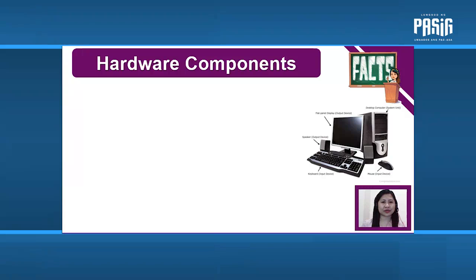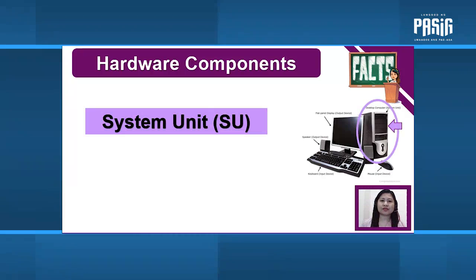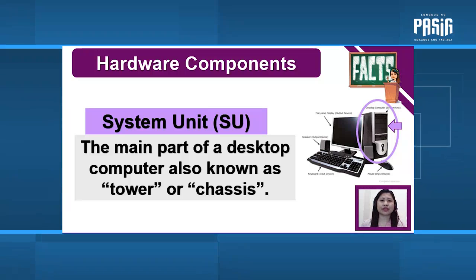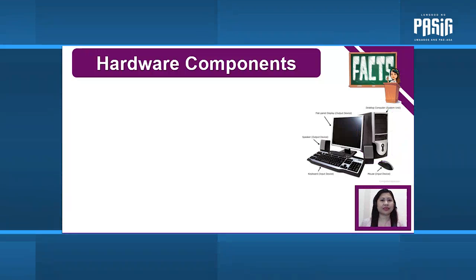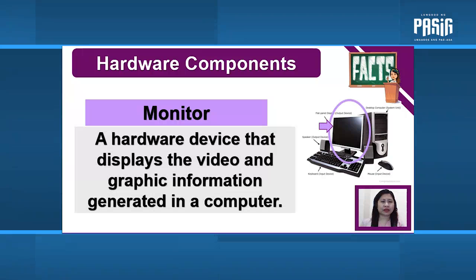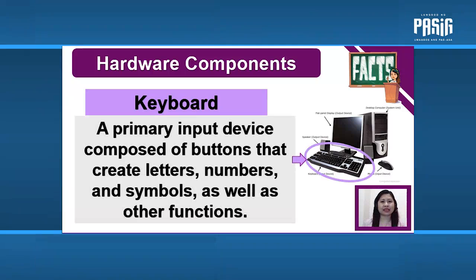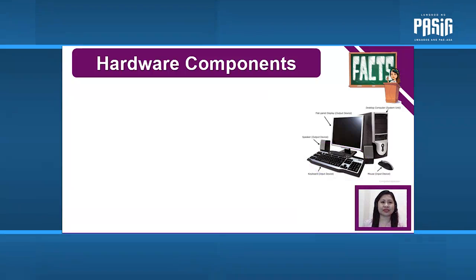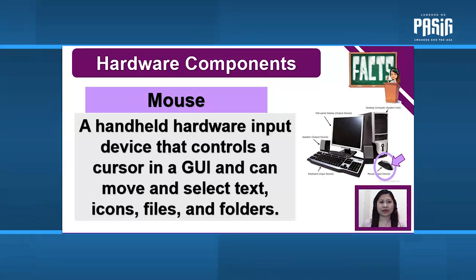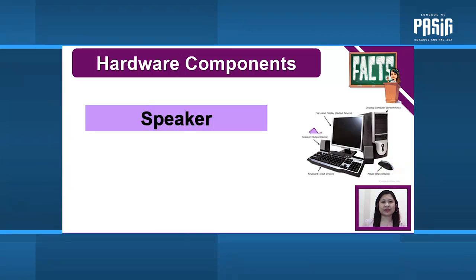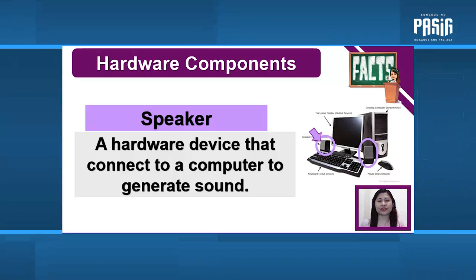Let us now study some basic hardware components of a computer. First is the system unit, which most Filipinos call CPU, but it is not — the system unit is the main part of a desktop computer, also known as tower or chassis. Next is the monitor, a hardware device that displays the video and graphic information generated by a computer. The keyboard is a primary input device composed of buttons that create letters, numbers, symbols, and other functions. The mouse is a handheld hardware input device that controls a cursor in a GUI and can move and select text, icons, files, and folders. The speaker is a hardware device that connects to a computer to generate sound.